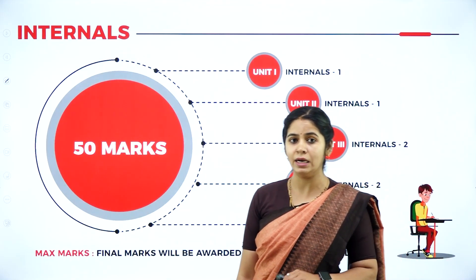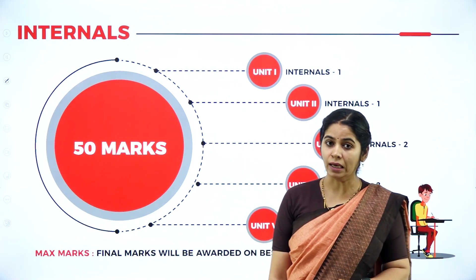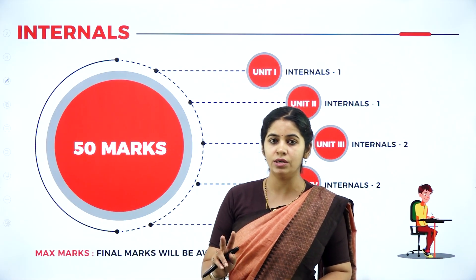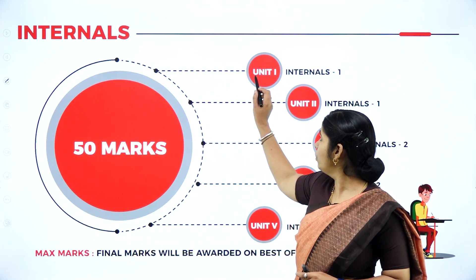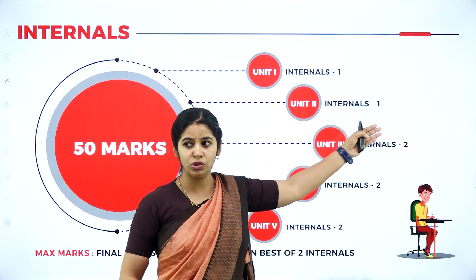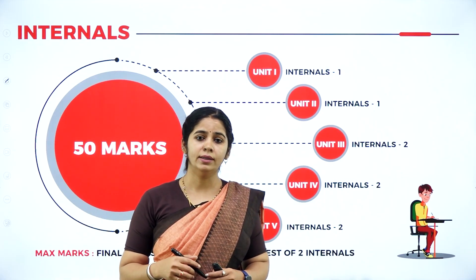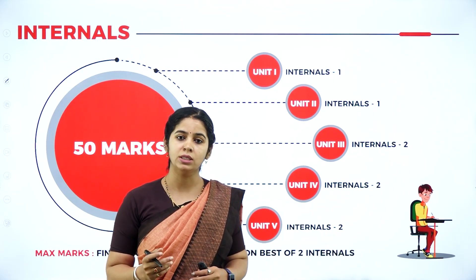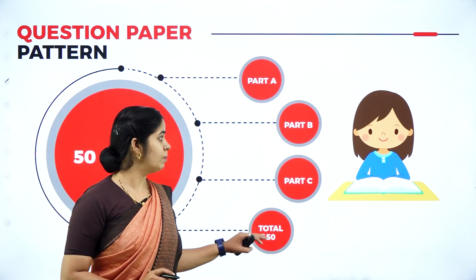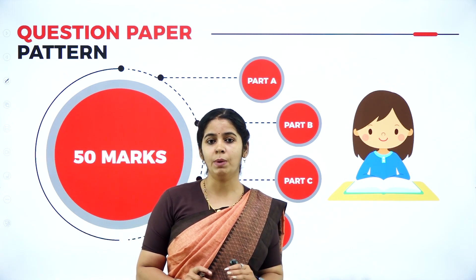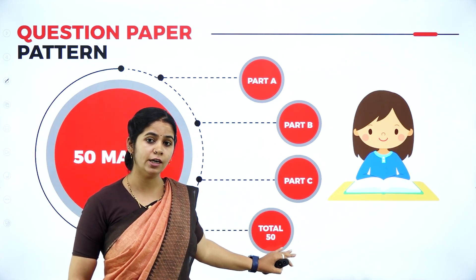Now let's look at the marks distribution. This is a 100-mark paper split 50-50: 50 marks for internals and 50 marks for externals. For the 50 internal marks, two internals will be conducted — Internal 1 and Internal 2 — and the best will be taken. Module 1 and 2 are covered in Internal 1, and modules 3, 4, and 5 in Internal 2. Internals carry 30 marks for written work and 20 marks for seminars and other activities. The final external paper is also 50 marks, divided into Part A, Part B, and Part C.